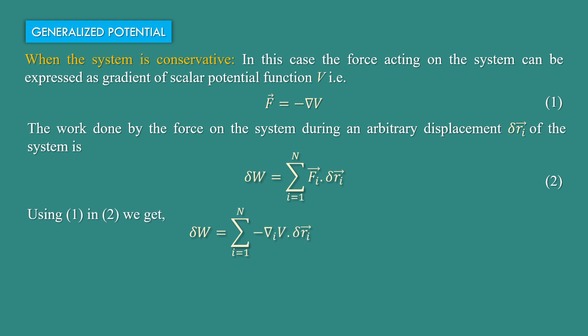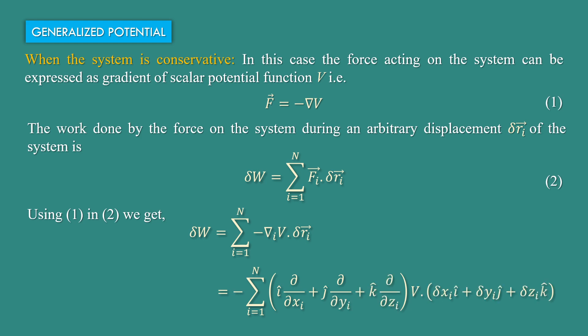Using equation 1 in equation 2, we get delta W equal to summation i goes from 1 to N, minus del_i V dot delta r_i, equal to minus summation i goes from 1 to N. Now del_i can be written as i-cap del/del x_i plus j-cap del/del y_i plus k-cap del/del z_i, into V.